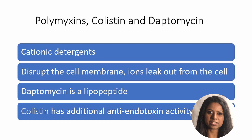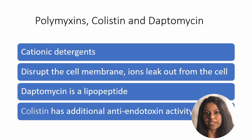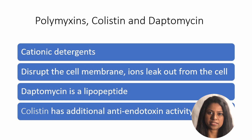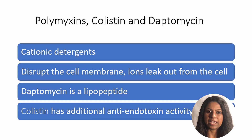Antibiotics that are active on the bacterial cell membrane include polymyxins and daptomycin. Polymyxin B and polymyxin E (colistin) bind to the outer membrane polysaccharides and disrupt the outer membrane, acting as cationic detergents. Colistin also has anti-endotoxin activity since it binds to and inhibits the activity of lipid A. Daptomycin is a lipopeptide antibiotic that attaches to the cell membrane and punches holes, causing leakage of ions and cell death.